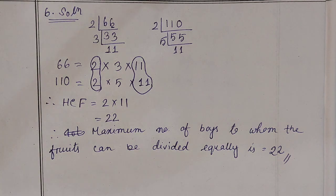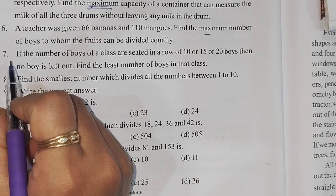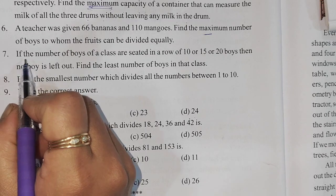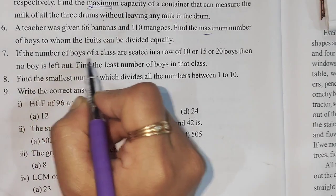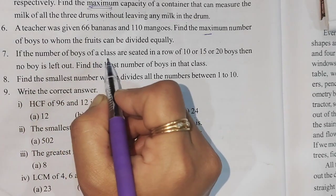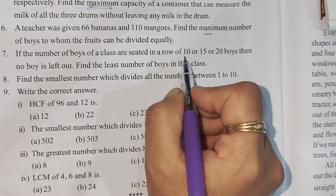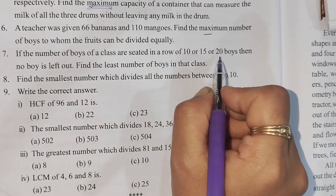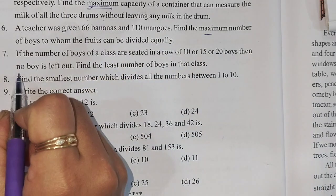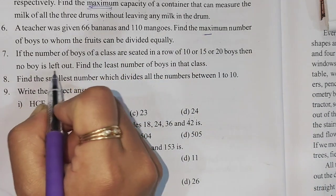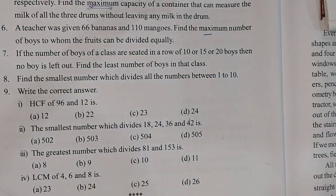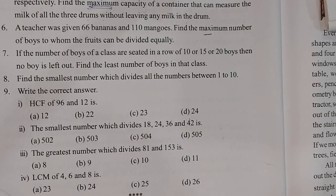Next, question number 7: If the number of boys of a class are sitting in a row of 10 or 15 or 20 boys, then no boy is left out. Find the least number of boys in that class.